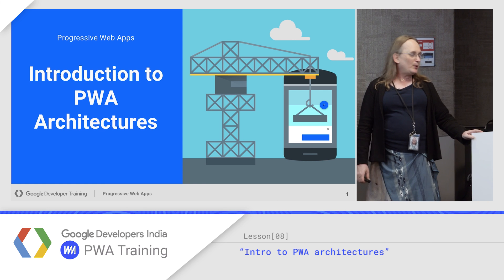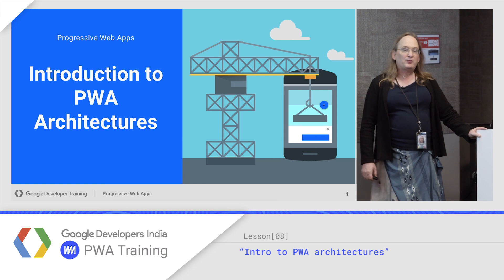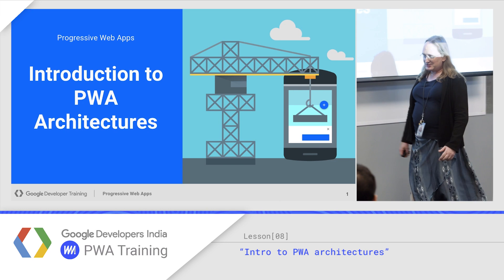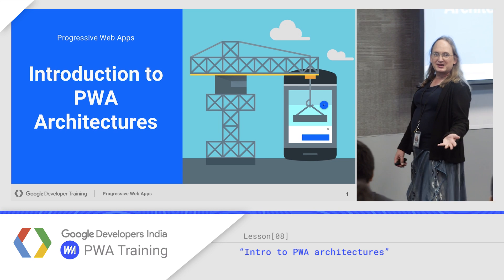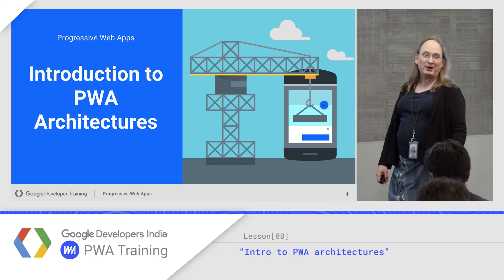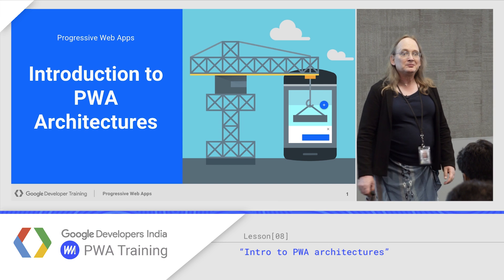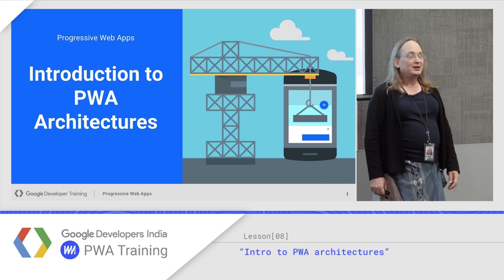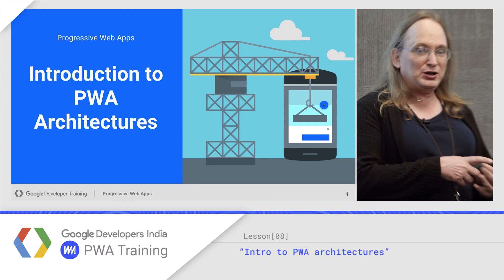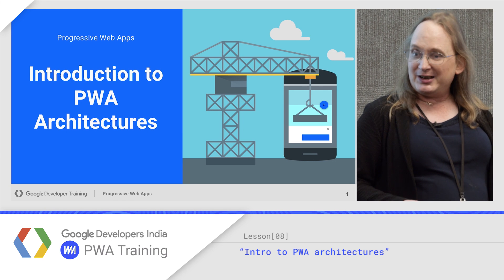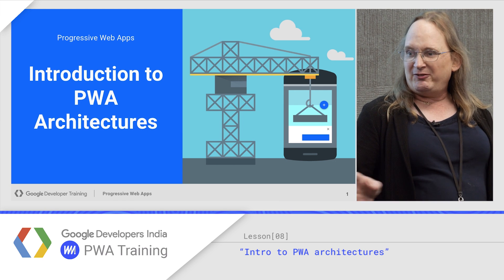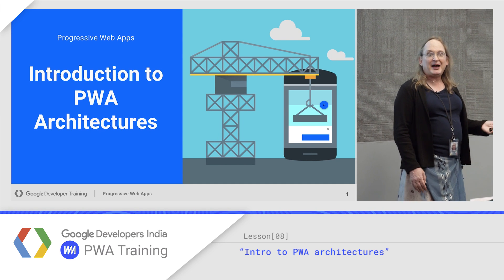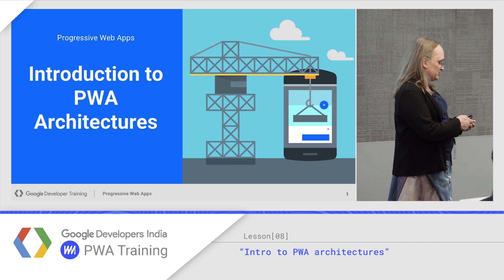So I've shown you the basic way of building a progressive web app, which is to cache your core files and just let everything else come from the network, or maybe cache it as you go. But that's not the only way to do it. The choices that you make in what you cache and don't cache have implications both for disk size and performance. So we need to talk about different PWA architectures.